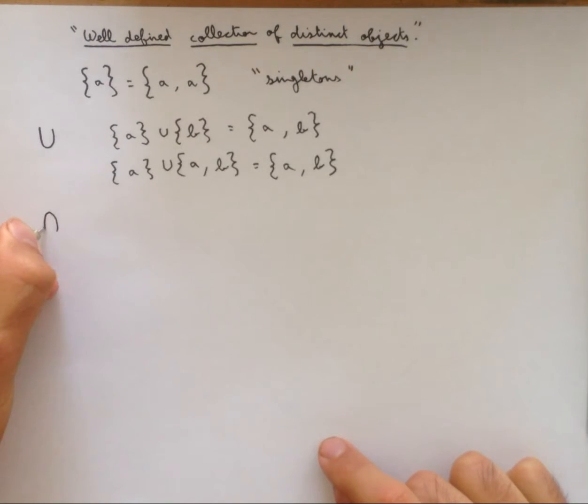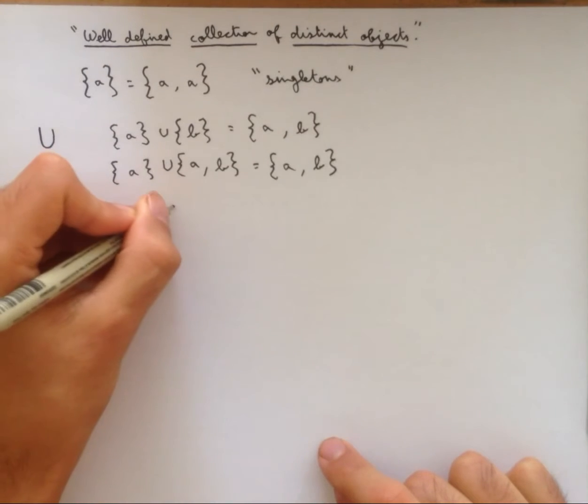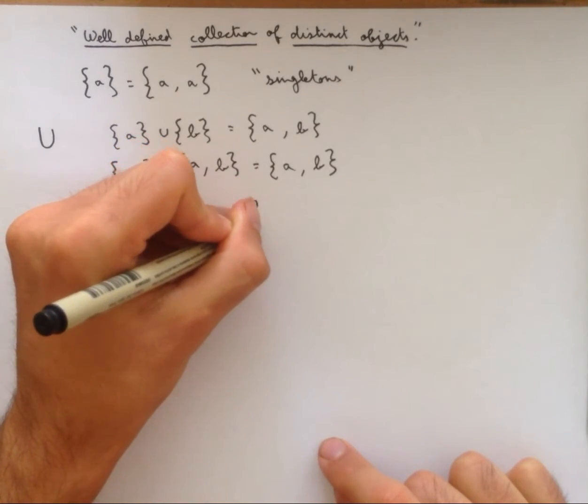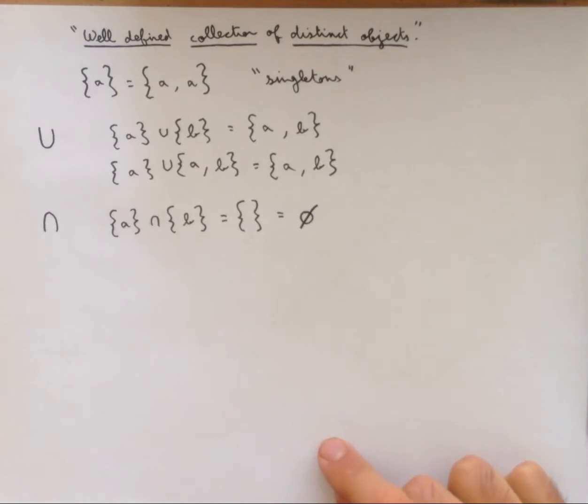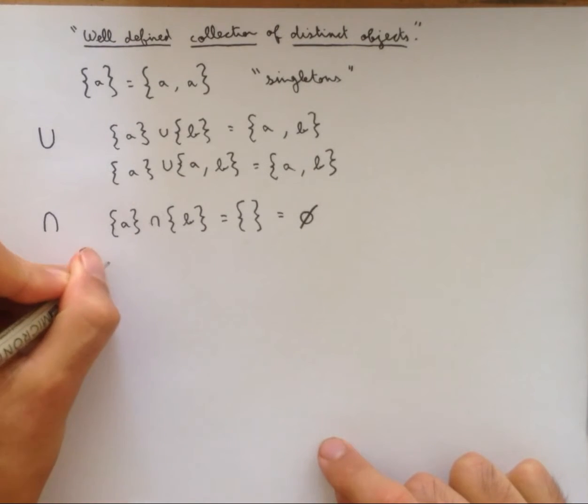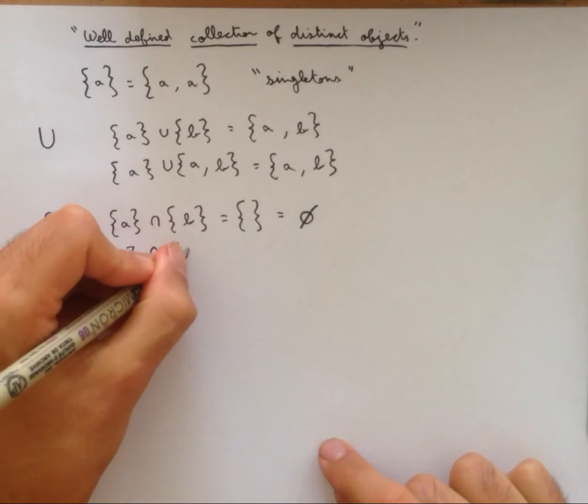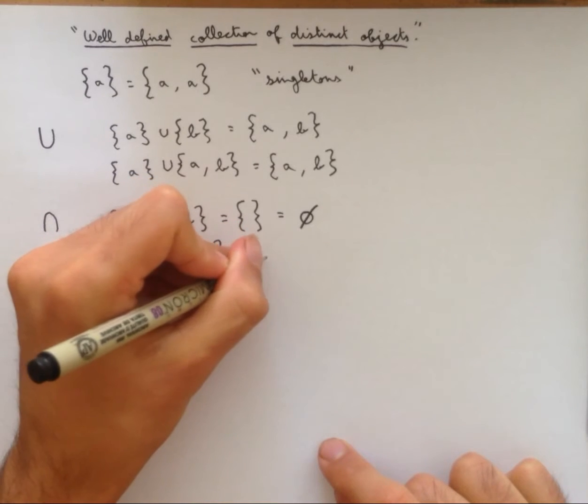Another operation is the intersection, which takes only the elements that the two sets have in common. So the set containing a intersected with the set containing b is equal to the empty set, which you can also write as a zero with a line through it. Just like that. Another example is the set containing a and b intersected with the set containing b and c is equal to singleton b.